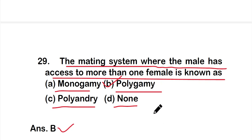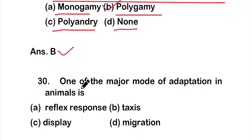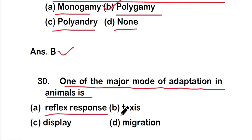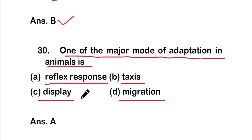Question number 30: One of the major modes of adaptation in animals is — option A: reflex response, option B: taxes, option C: display, or option D: migration. The correct answer is option A — reflex response is one of the major modes of adaptation in animals.